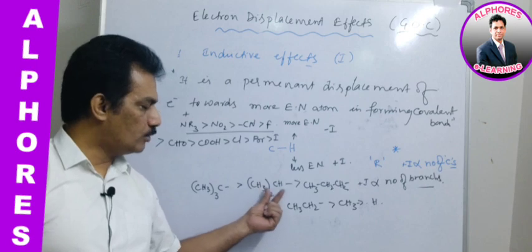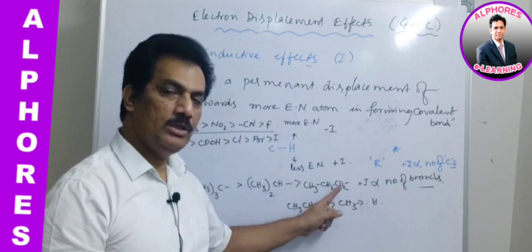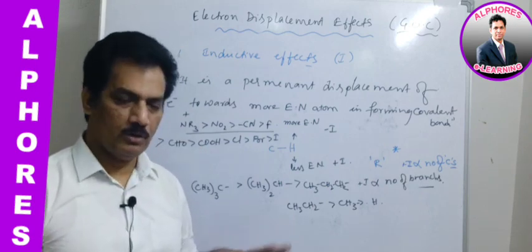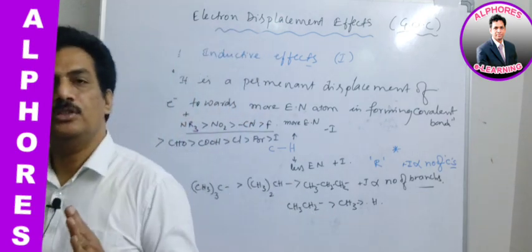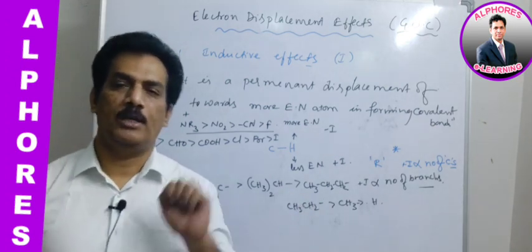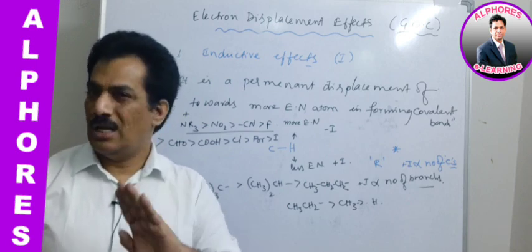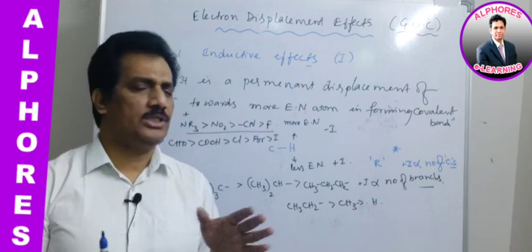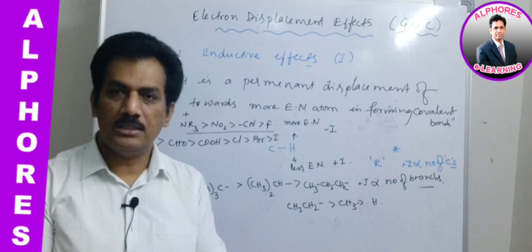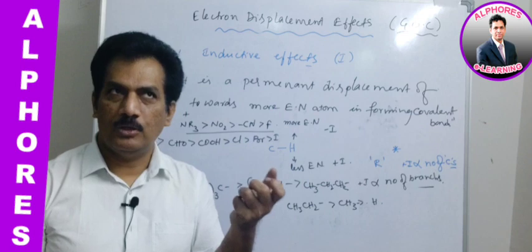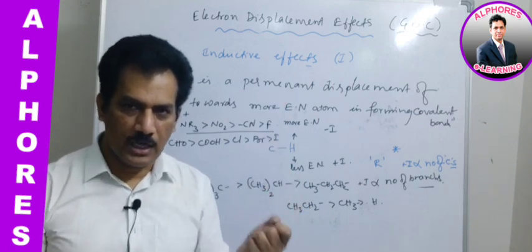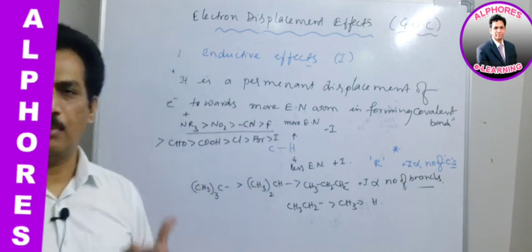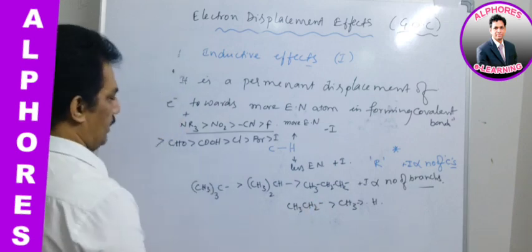These are the salient points related to inductive effect. To summarize: inductive effect is a permanent displacement of electrons through sigma bond in forming the covalent bond. Even though the displacement is permanent, electrons are not shifted from one orbital to another — they retain in the same orbital. This facilitates the liability of the molecule for the approach of charged reagents. The reference for plus-I or minus-I is hydrogen.